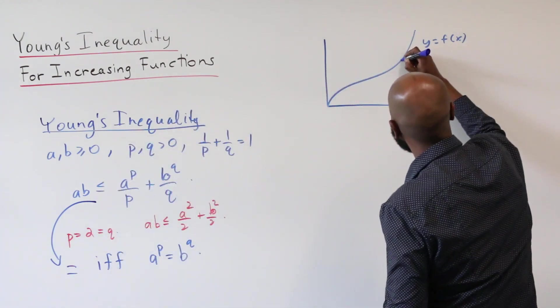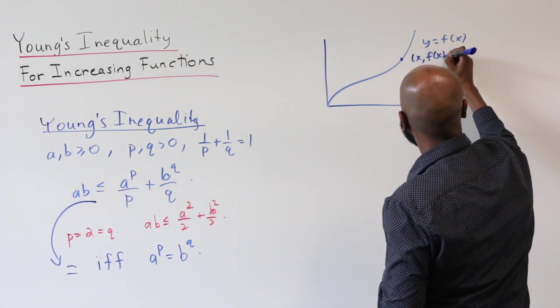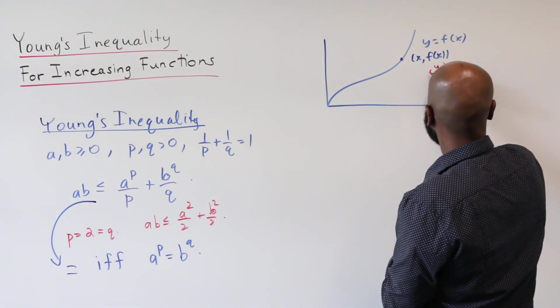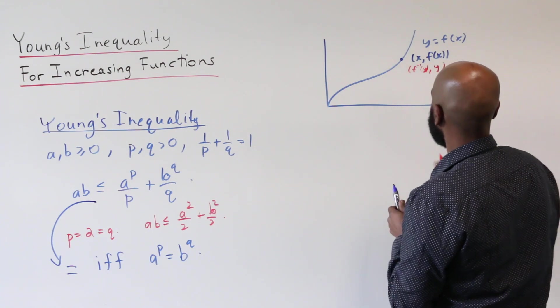More explicitly, if we have a point here, the point has coordinates x, f of x. And so we can think of this as a point whose y-coordinate is y, and subsequently its x-coordinate is f inverse of y.